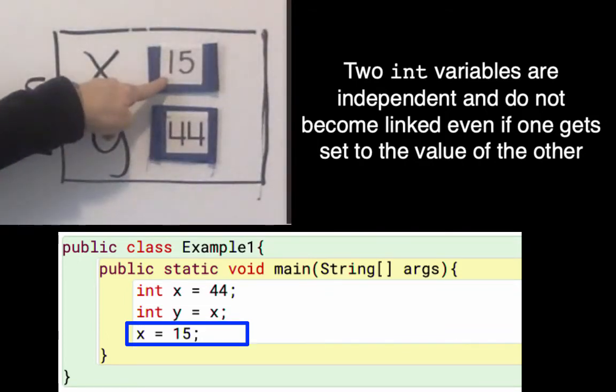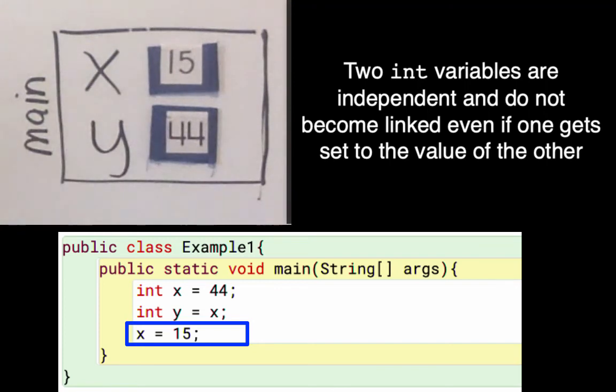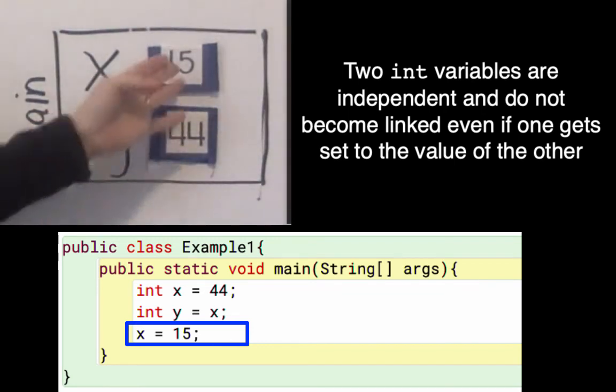When we change the value of x, it didn't change the value of y. So those two int variables are independent and do not become linked even if one of them gets set to the other value. So like y didn't become linked to x.